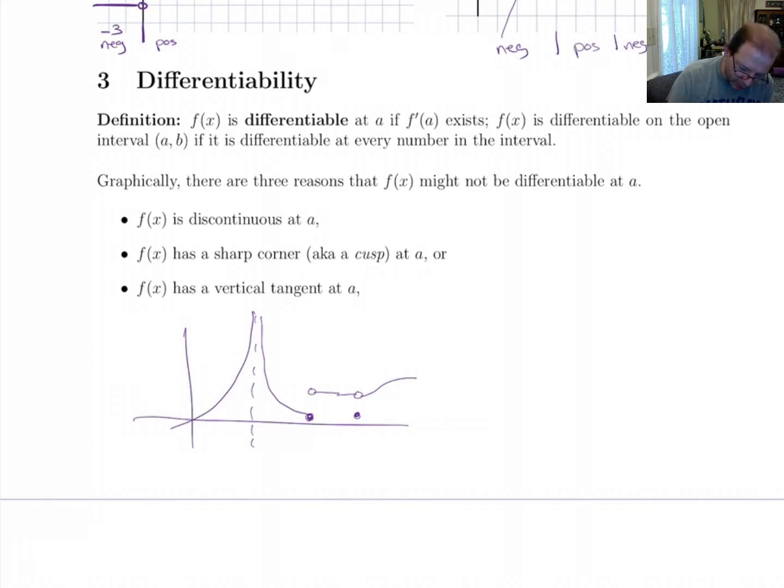The second one, we saw this one in a few earlier examples, is if you have a sharp corner, also known as a cusp. The reason for that is the derivative jumps as you go from one place to the next. The slope makes an abrupt change there.